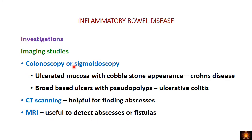Colonoscopy or sigmoidoscopy can be performed to examine the mucosal surface. In Crohn's disease, cobblestone appearance with railroad track-like healing scars and ulcers is seen, while in ulcerative colitis broad-based ulcers with pseudopolyps are found. CT scanning and MRI are helpful for identifying abscesses or fistulas. These investigations complete the comparison between ulcerative colitis and Crohn's disease in inflammatory bowel disease.